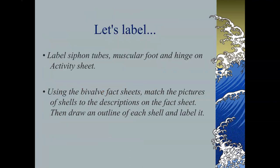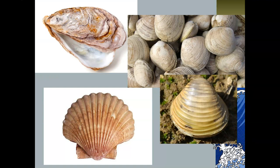Hopefully you've completed that task. Next, using the bivalve fact sheet attached to the assignment in Google Classroom, match the pictures of shells shown on the next slide to the descriptions on the fact sheet. Then draw an outline of each shell and label it. Read through the fact sheet — it gives you several different types of bivalves — and decide which picture matches which item. Go ahead and pause the video; that will take about five to ten minutes.